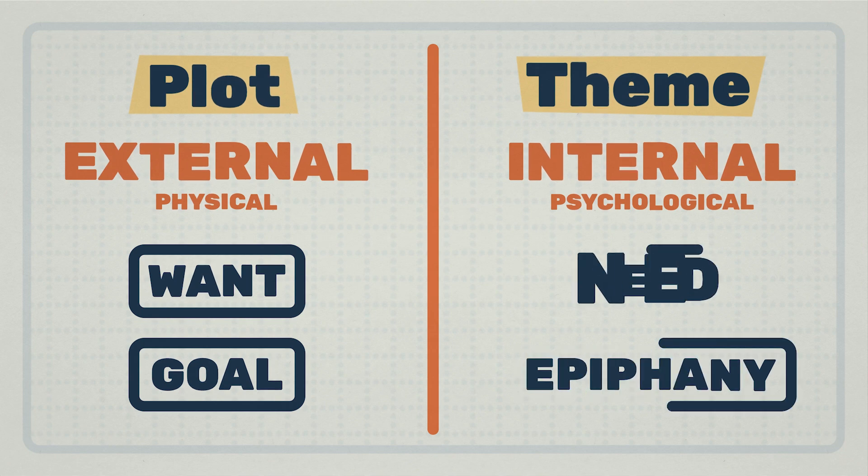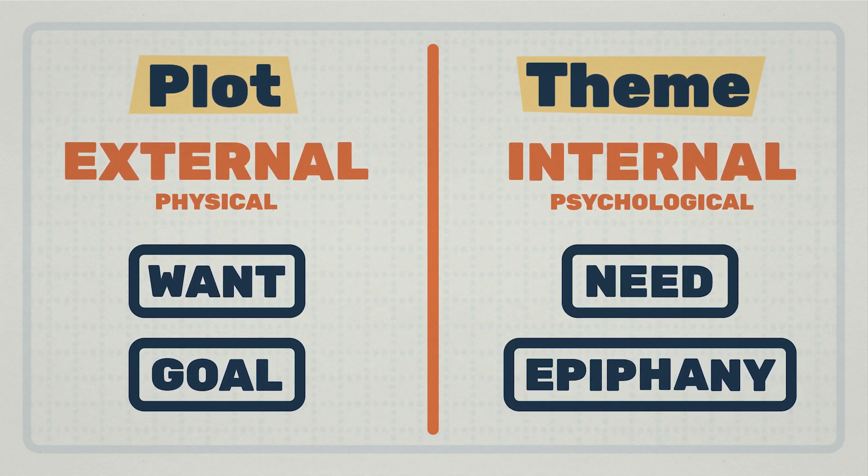How does the theme relate to your protagonist? In the last mini-course, we broke down the four protag pieces: the want, the goal, the need, and the epiphany. The want and the goal are related to the plot, while the need and the epiphany are related to the theme. The B-story describes actual moments in your story, and the epiphany is the most important of those moments. The need is a way of describing the lesson your protag learned — and that lesson is also known as the theme.